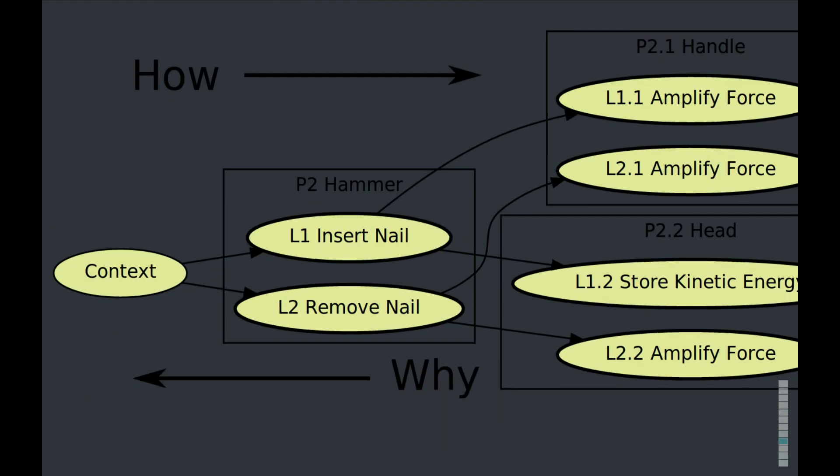But to actually see how the functions decompose from high levels to low levels, we can look at the functional decomposition. So here again we see that breakdown. The insert nail breaks down onto amplifying force in the handle and storing kinetic energy in the head. The removed nail breaks down onto amplifying force in the handle and further amplifying the force in the head. In this form of the diagram, as we go to the right of the diagram, it explains how things are done. And as we move to the left of the diagram, it explains why things are done.